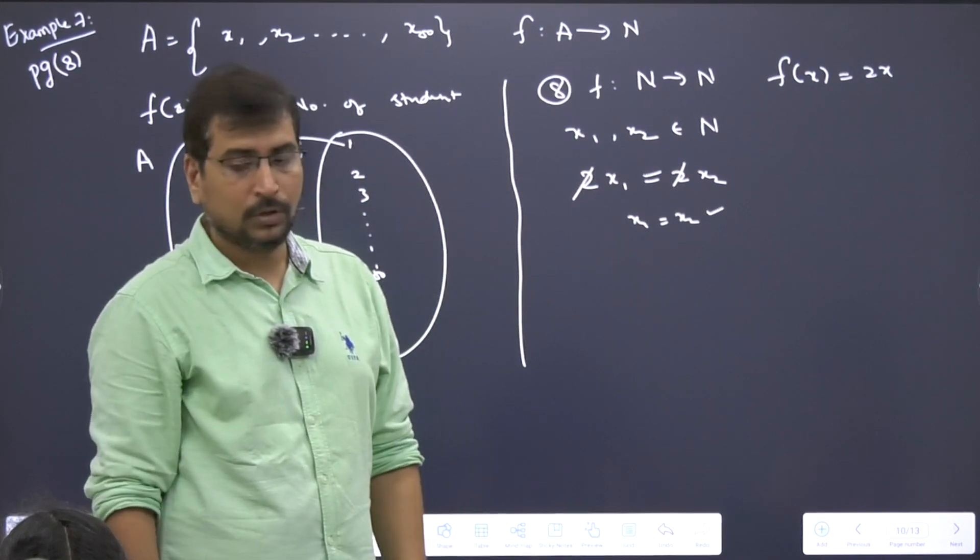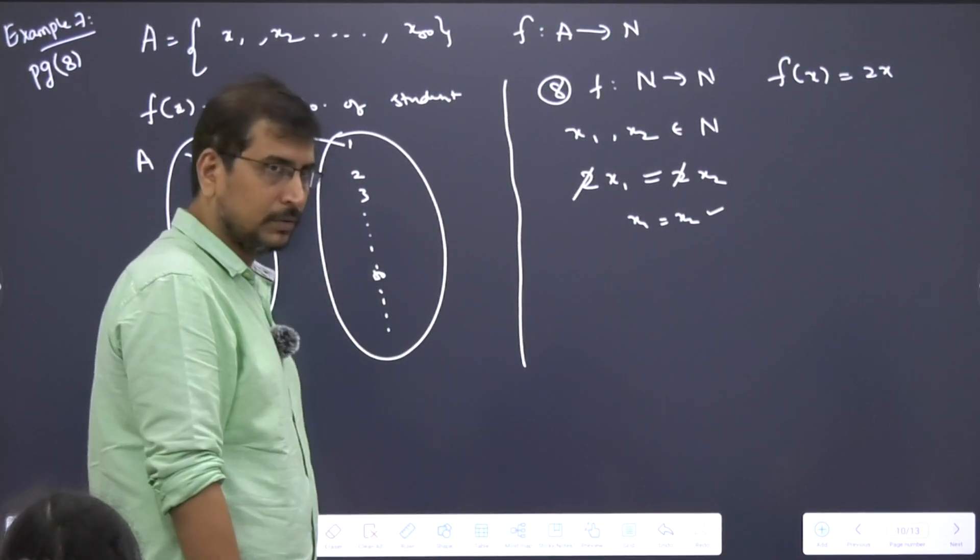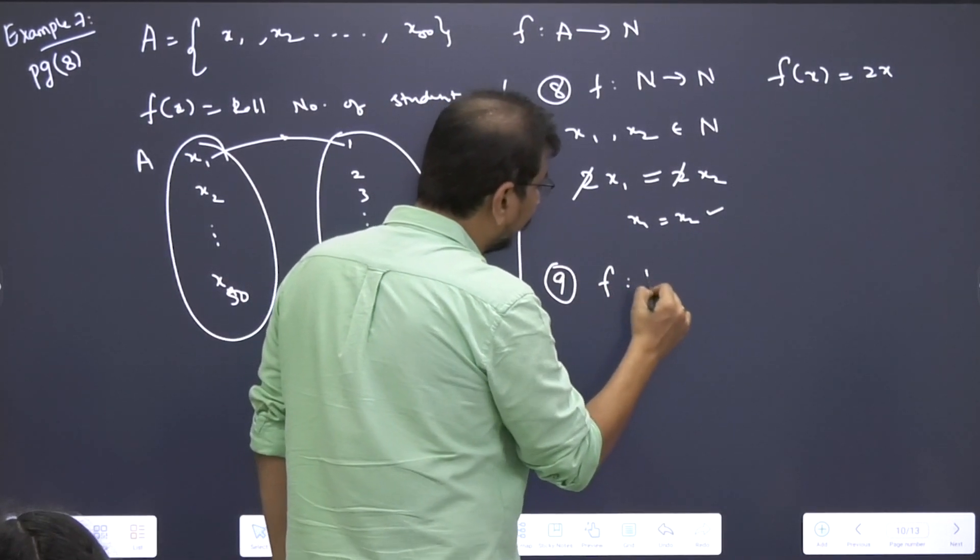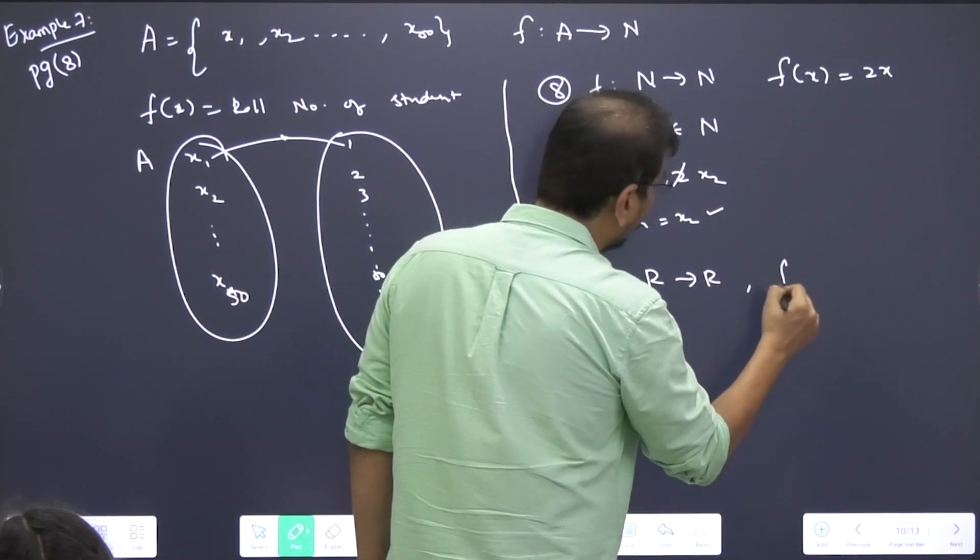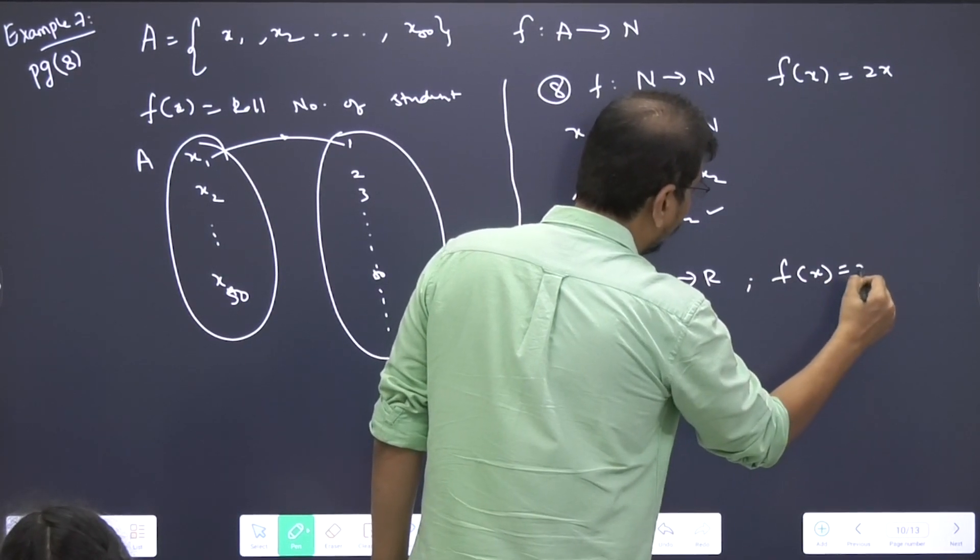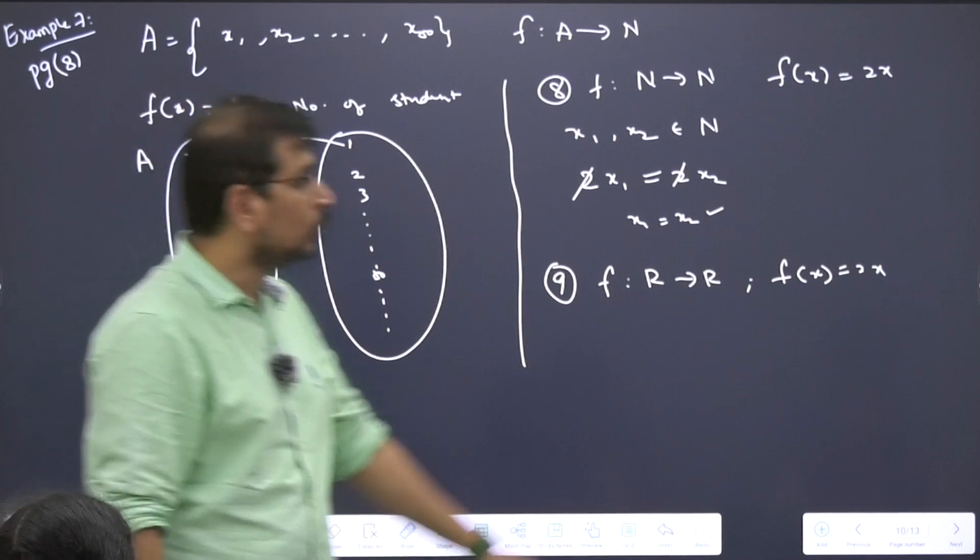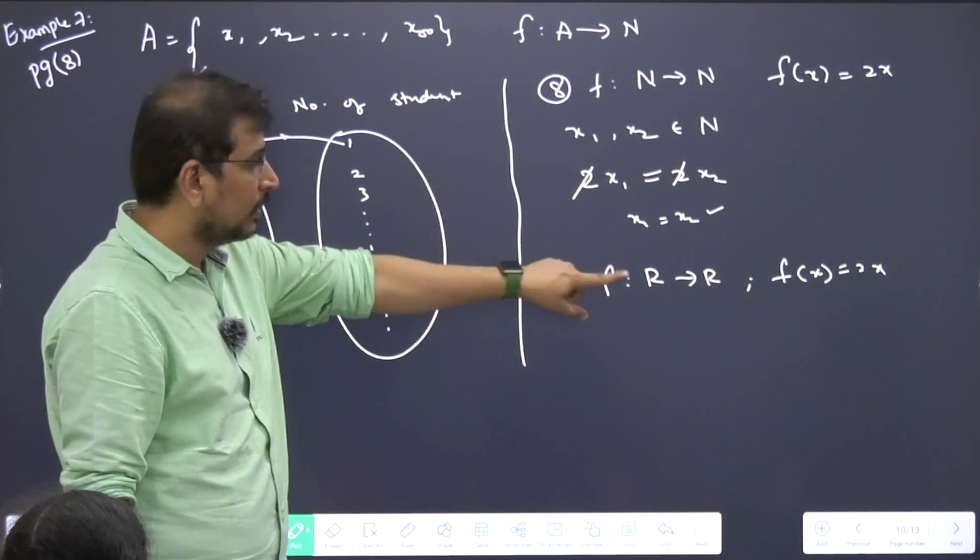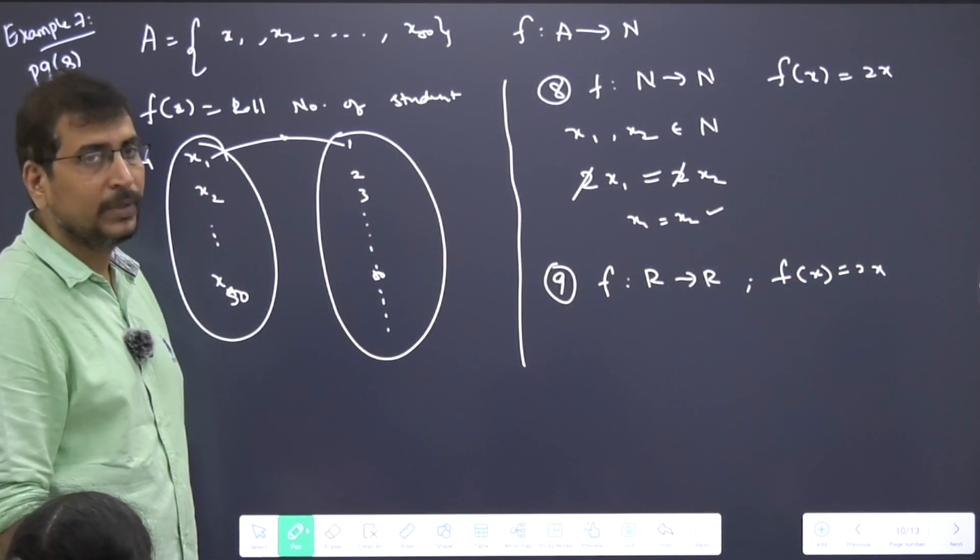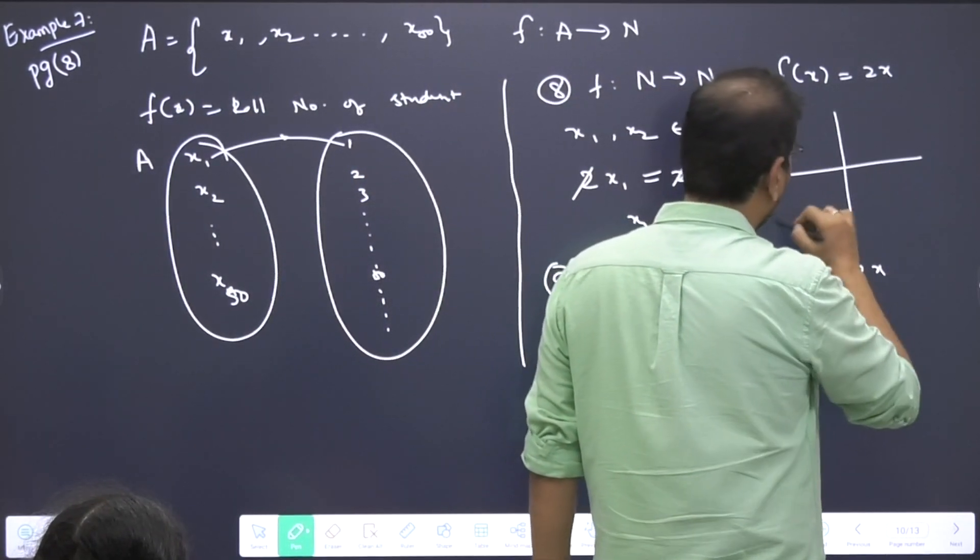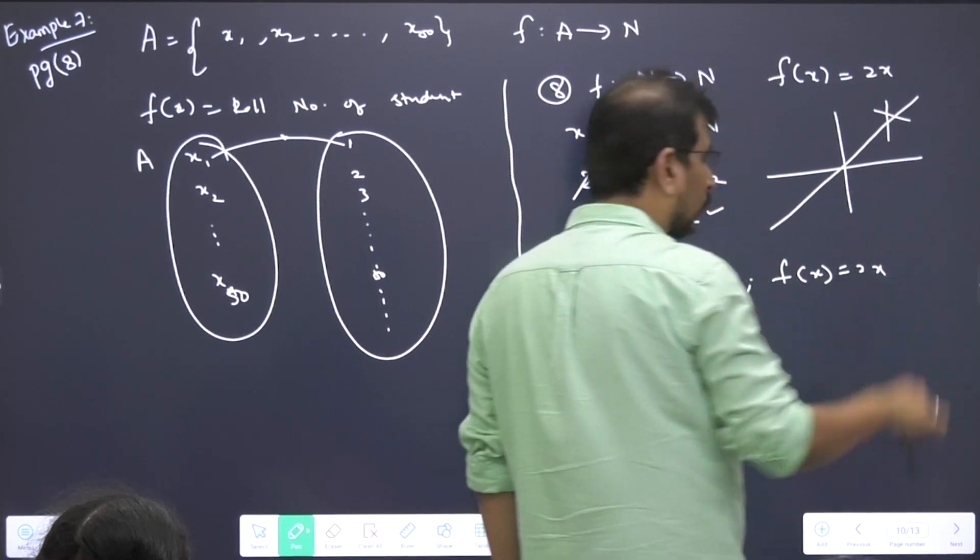But the only thing you need to be careful about is the domain and the codomain. If you see the next problem, f is a function map from R to R, but here also f(x) = 2x. What mistake I told you will make? We'll take this into consideration, but we need to look at the domain and the codomain. If you draw the graph for it and say this is going to be the graph, it is wrong.